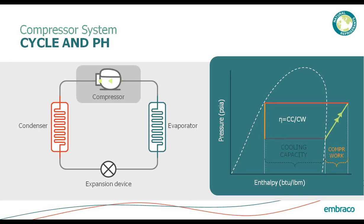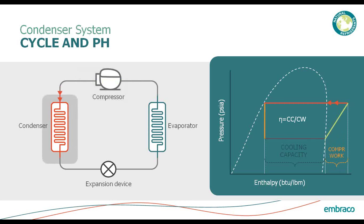Let's look at the compressor side of the system. The compressor is adding work to the system — taking electrical energy and converting it to mechanical work to raise the pressure. This low pressure, relatively low temperature vapor (typically 40 to 90 degrees Fahrenheit) is raised to a very high pressure, high temperature vapor, which could be anywhere from 160 to 200 degrees, by the time it reaches the end.